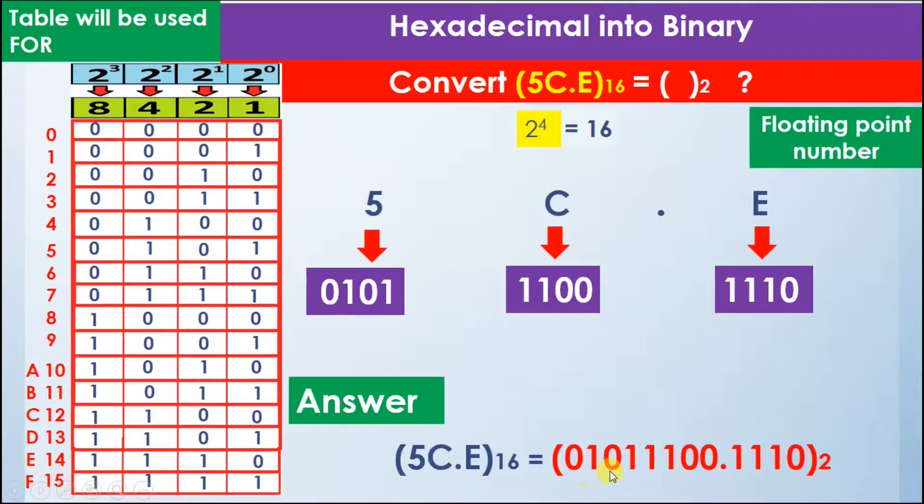Now we can say that 0101 comes from here, 1100 comes from here, and next we have the decimal point that will maintain its position, and 1110 comes from here.